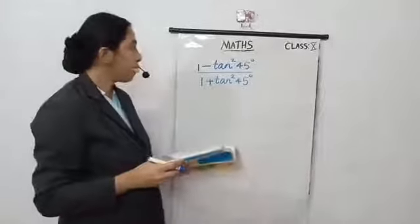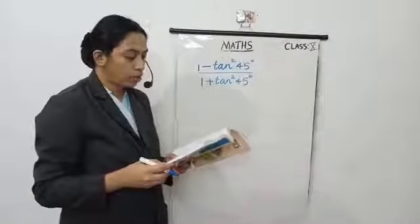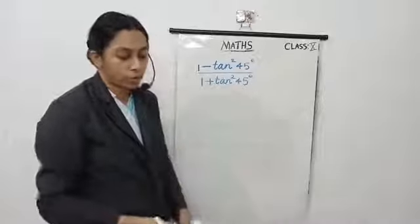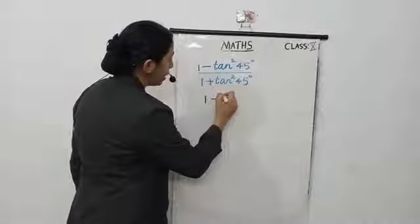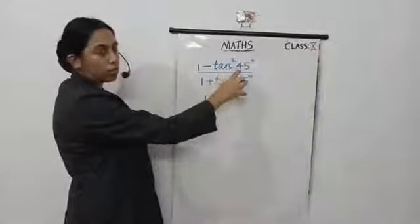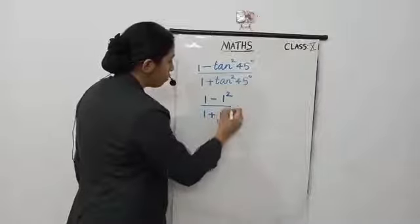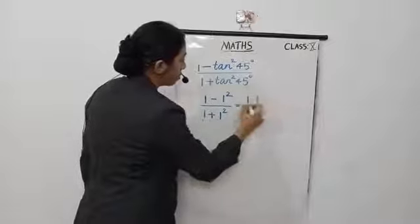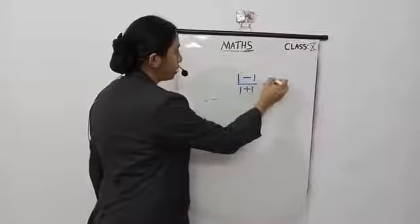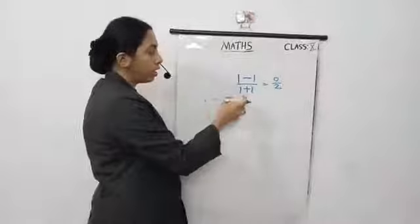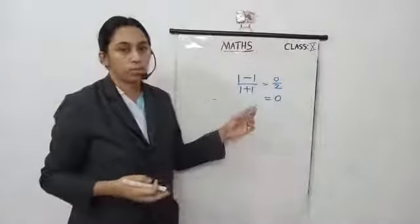Next is sub-question 2: 1 minus tan² 45° divided by 1 plus tan² 45°. So tan 45° is 1 — you need to memorize this table. Substitute that value: 1 minus 1 squared by 1 plus 1 squared, so 1 minus 1 is 0 and 1 plus 1 is 2, giving 0 by 2. This is equal to 0. So the final answer is 0 and option B is correct.